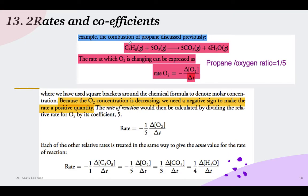Here is one more example: propane reacting with oxygen. This is a homogeneous reaction — since heterogeneous reactions are more complicated, in this chapter we will be focusing on homogeneous reactions. Propane reacts with oxygen to form carbon dioxide and water.